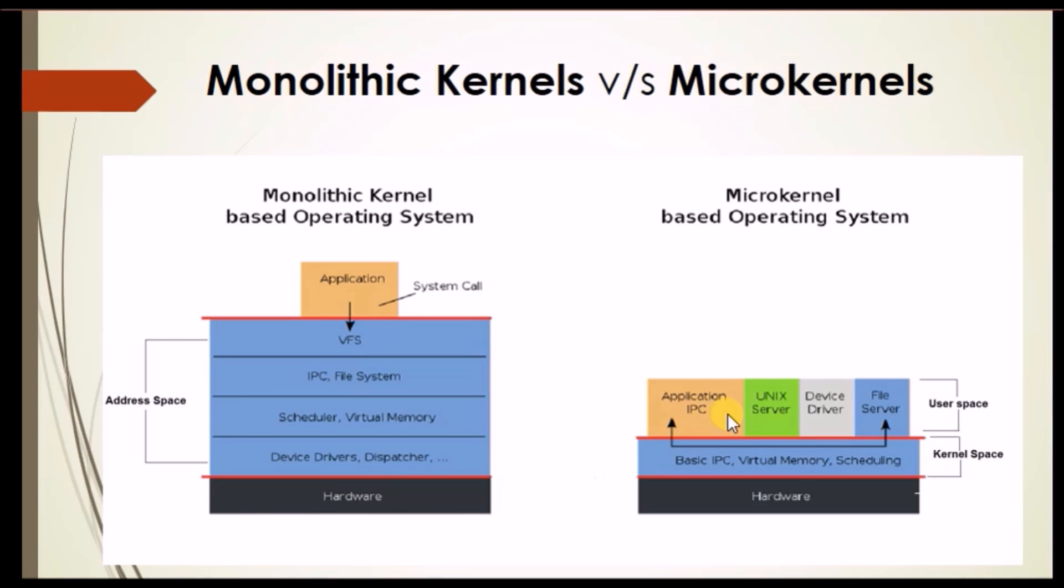The user space has its own services like application IPC, file server, device driver, file servers, and many more. And kernel space has its own services like basic IPC, virtual memory, scheduling, etc.